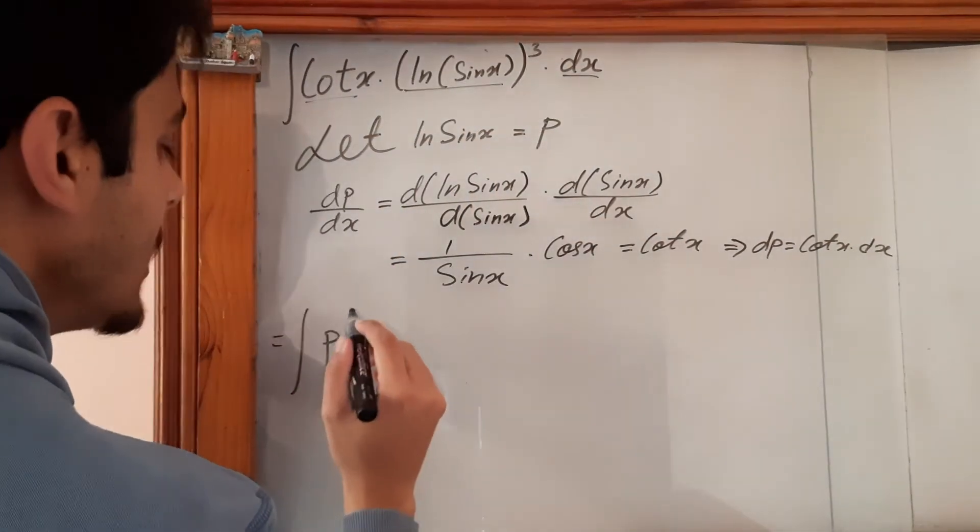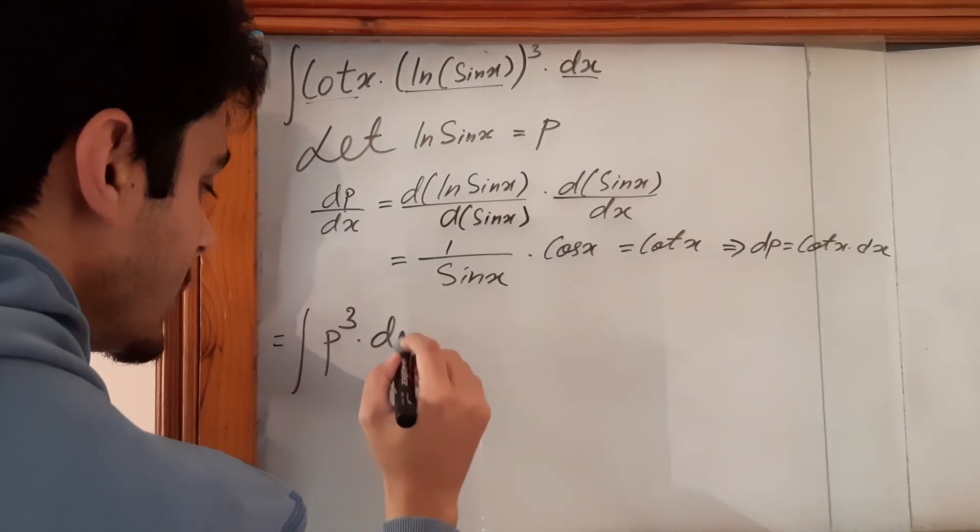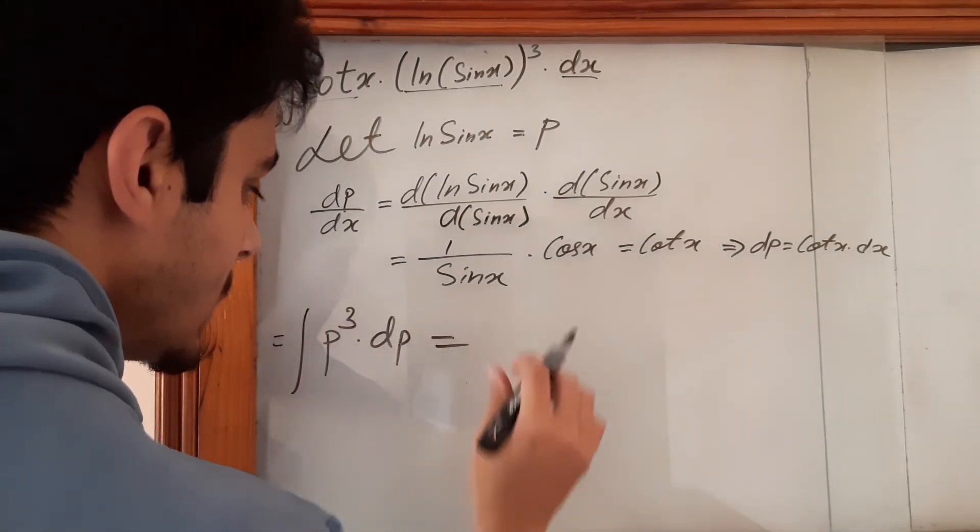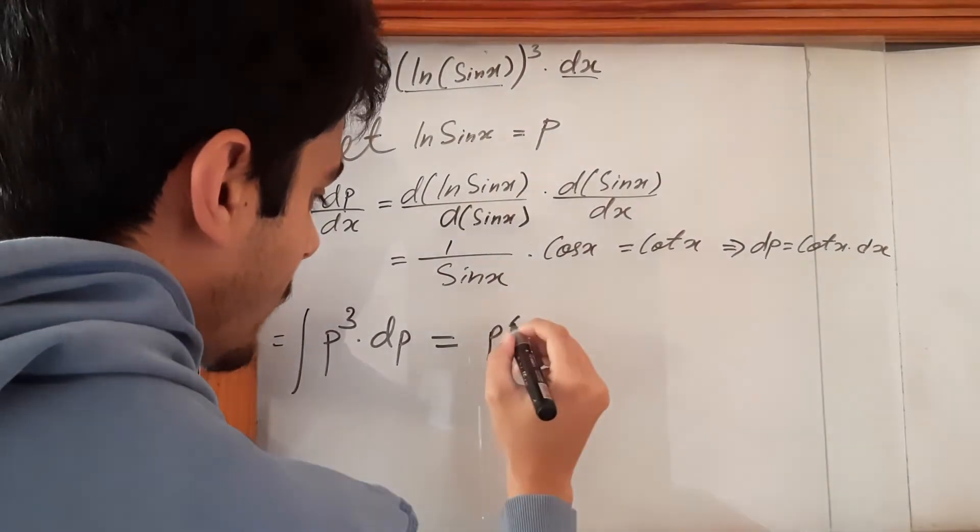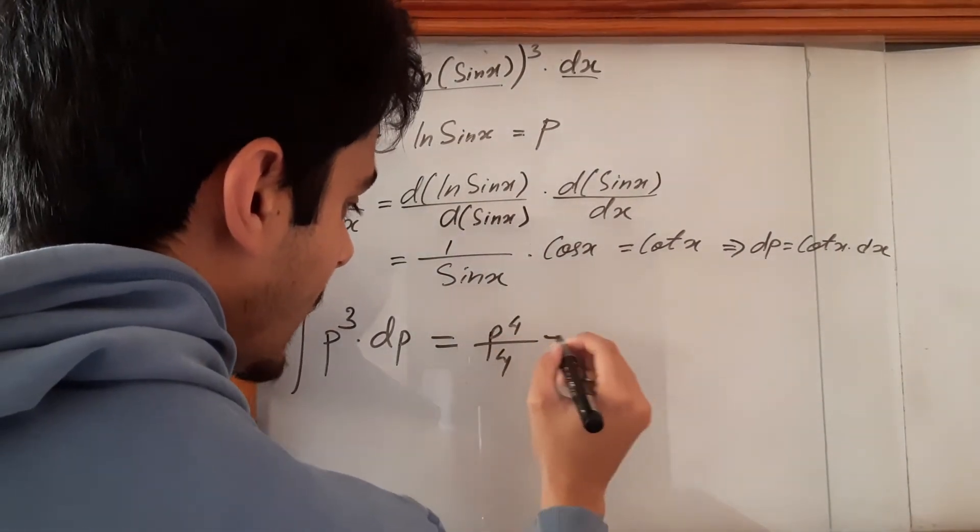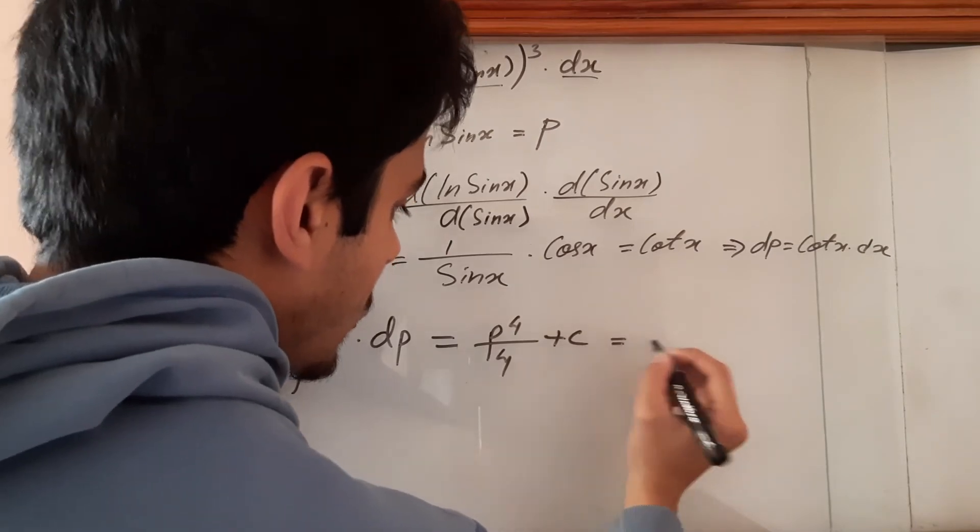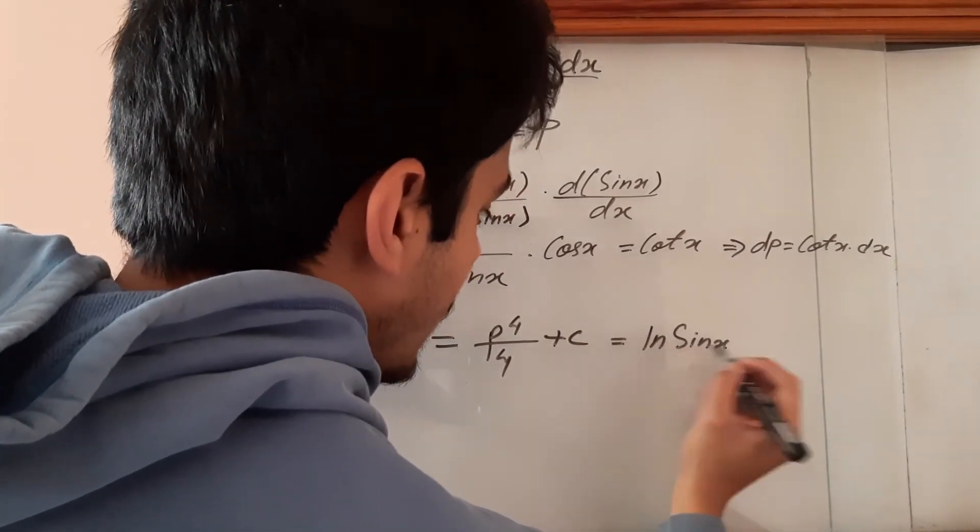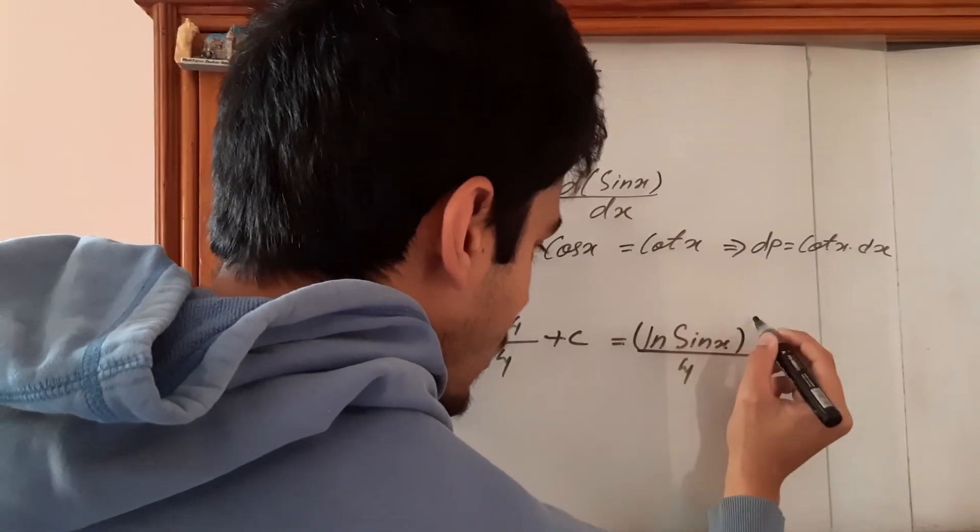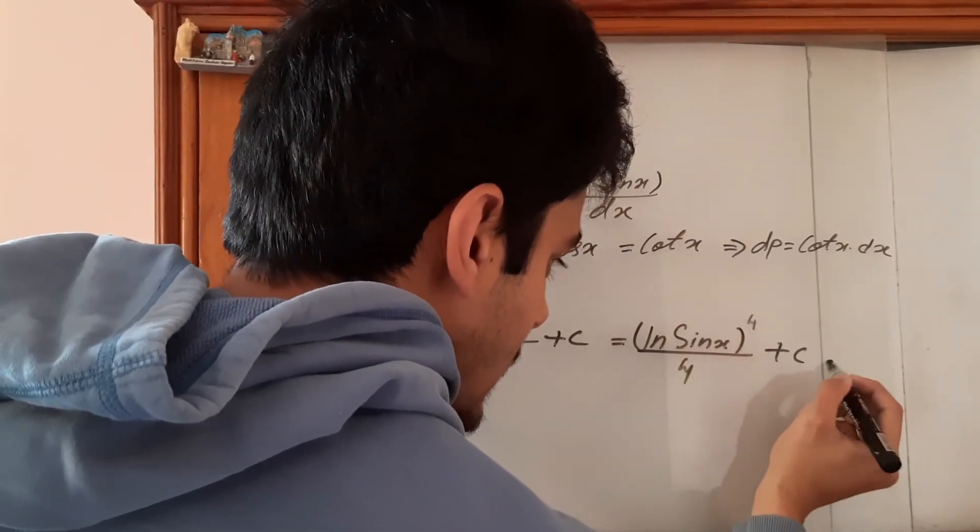So it is p cube times dp, which is equal to p to the power 4 upon 4 plus c. So it is equal to, let's replace the value, the original one, plus c.